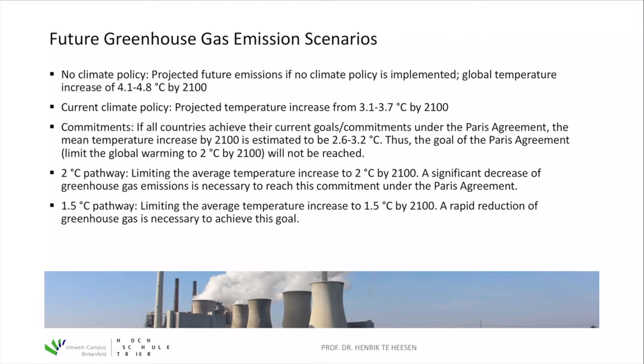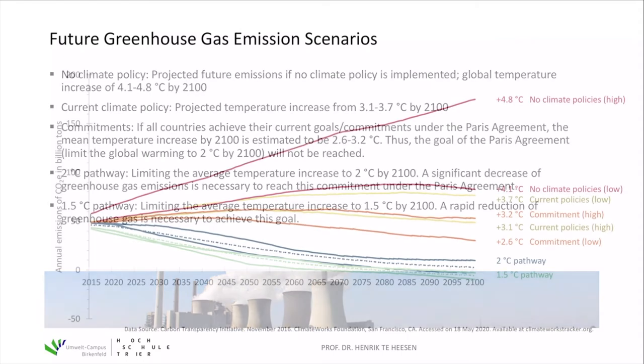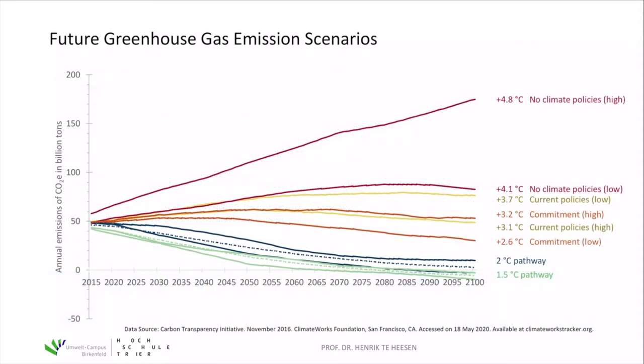There are two additional pathways. The 2-degree pathway requires a significant decrease in greenhouse gas emissions to stay within 2 degrees Celsius compared to pre-industrial conditions — more commitments and policies than currently defined. The fifth scenario, the 1.5 degrees Celsius pathway, aims to limit average temperature increase to 1.5 degrees Celsius by 2100 compared to pre-industrial conditions, requiring a rapid reduction of greenhouse gas emissions.